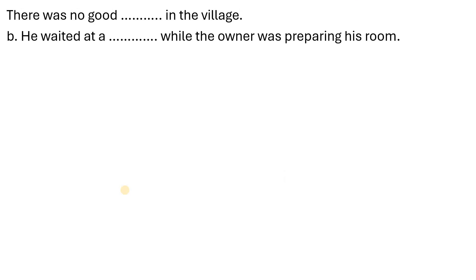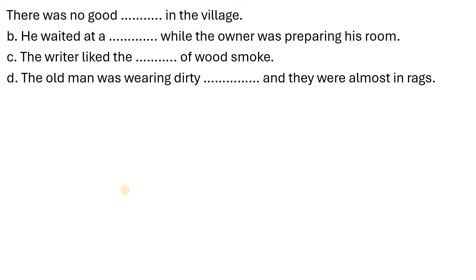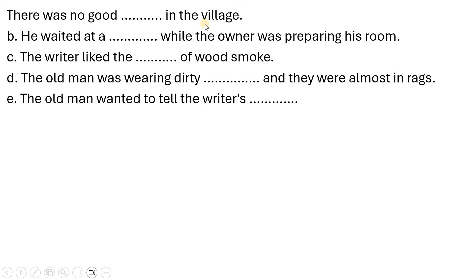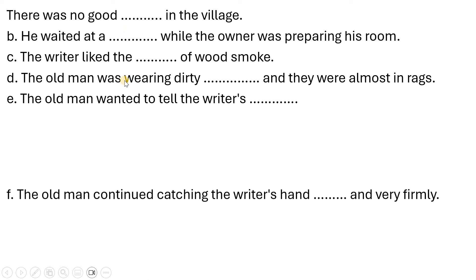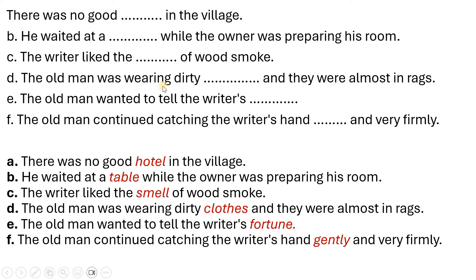Now the answers to the sentence completion exercise. A: There is no good hotel in the village. B: The writer waited at a table while the owner prepared the room. C: The writer liked the smell of wood smoke. D: The old man was wearing dirty clothes. E: The old man wanted to tell the writer's fortune. F: The old man continued catching the writer's hand gently and firmly.